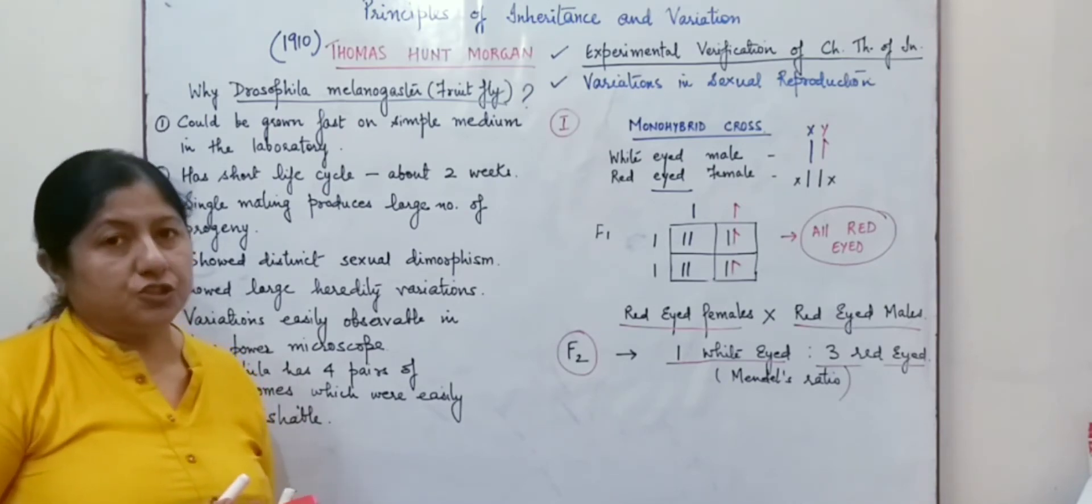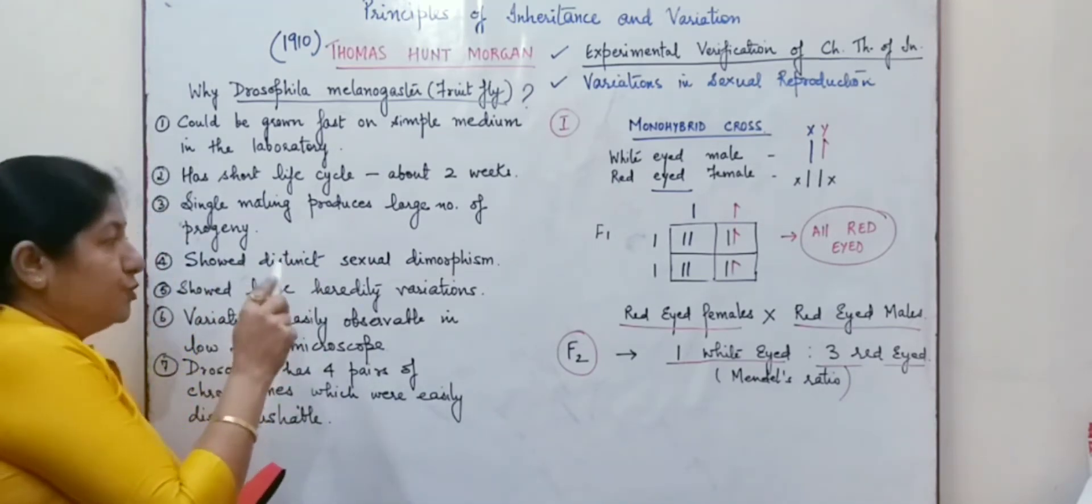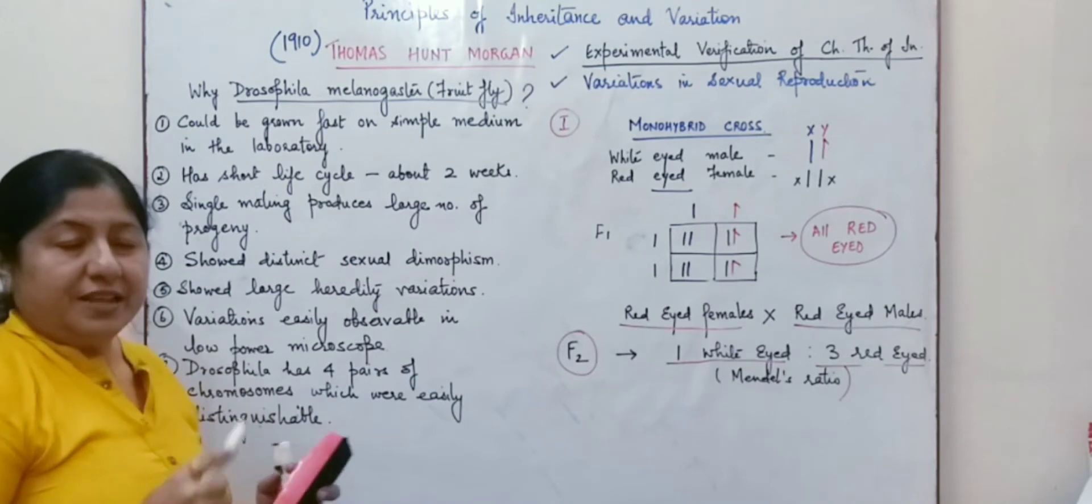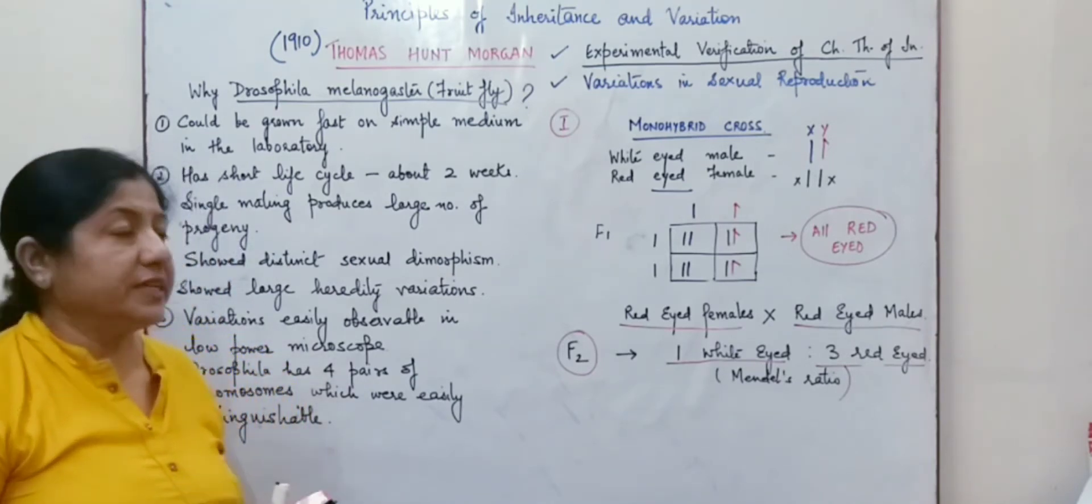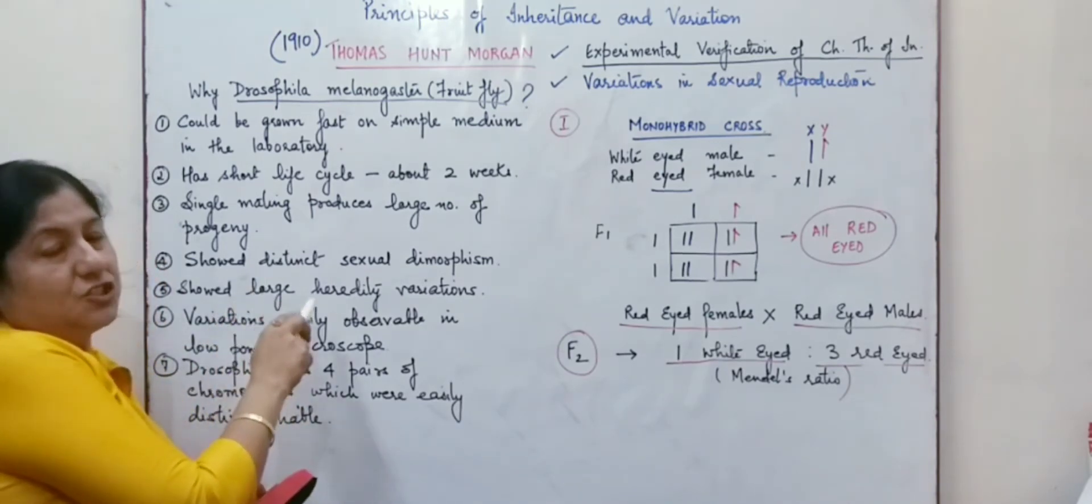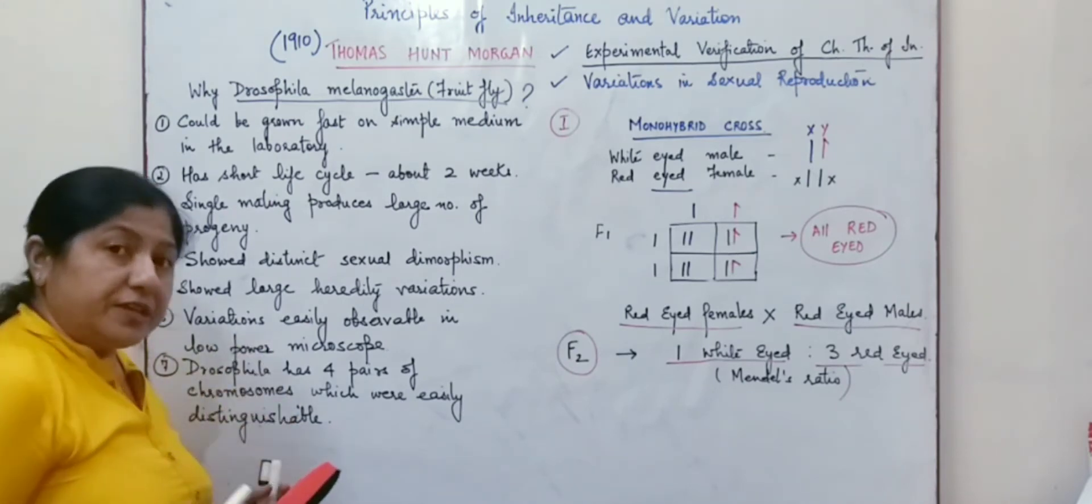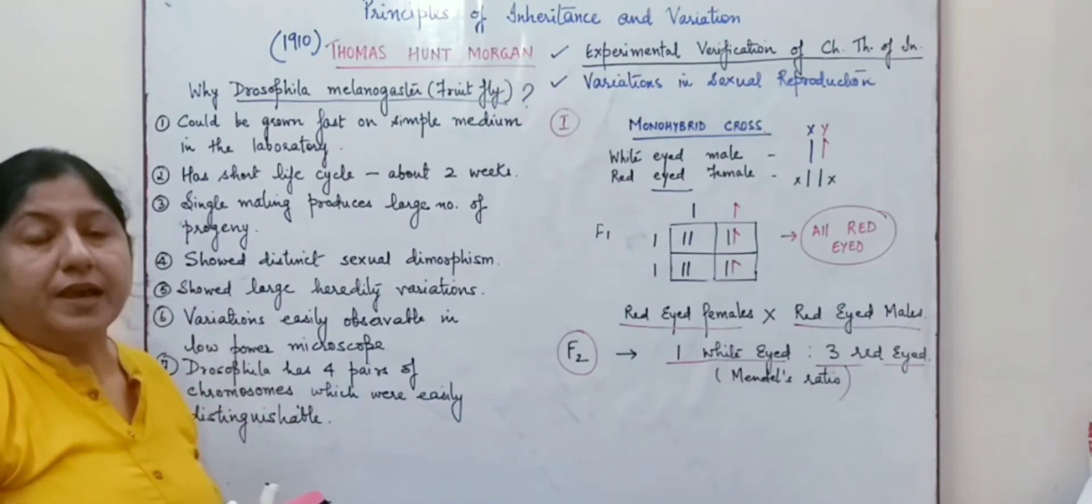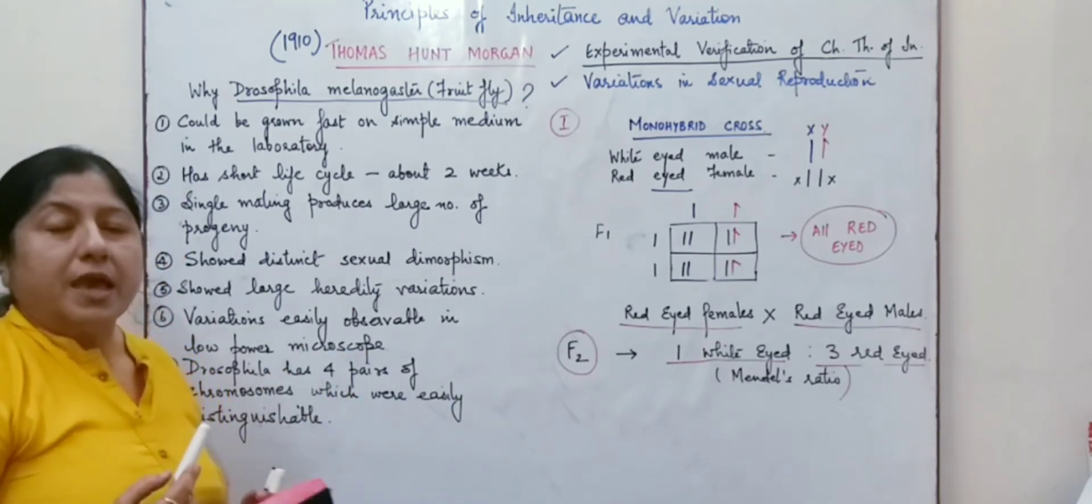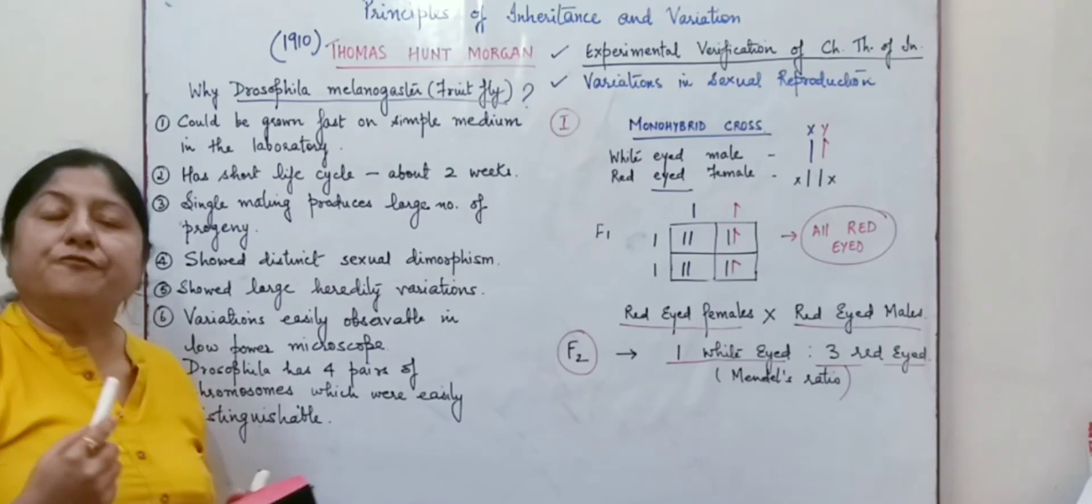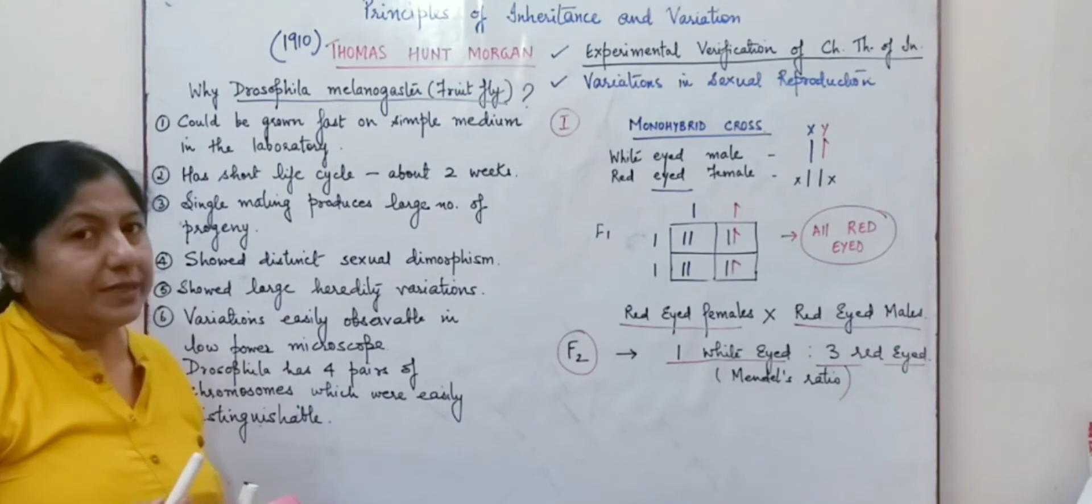So the study of the variation or the pattern of inheritance was much easier. The fruit flies show a very clear sexual dimorphism, that is the males and females are quite distinct from each other, and they had large number of hereditary variations. The variations in the fruit fly are easily observable in low power microscope and it had only 4 pairs of chromosomes which were quite distinct, so the study became much easier.